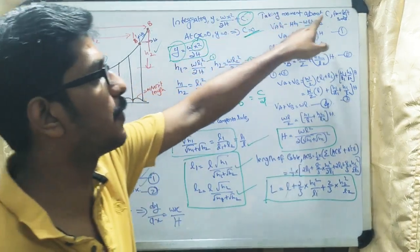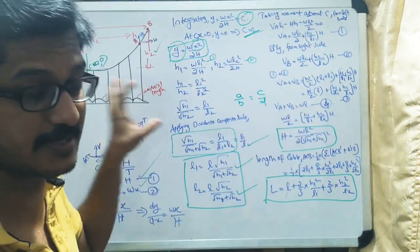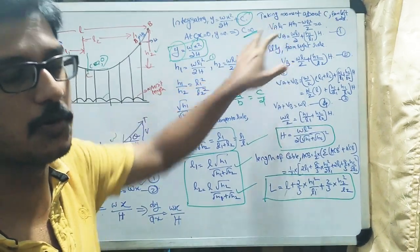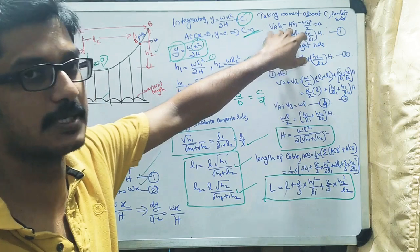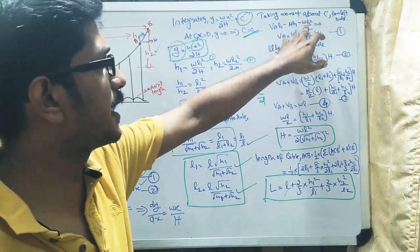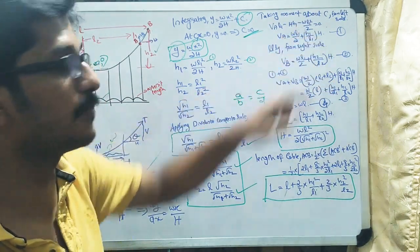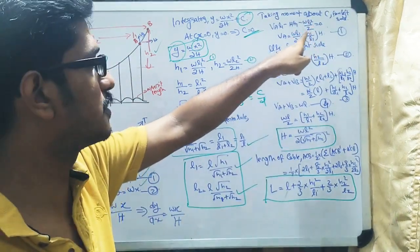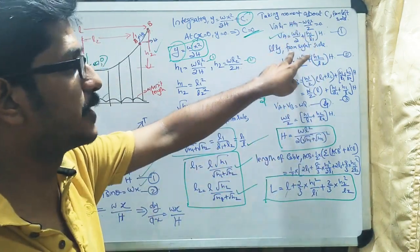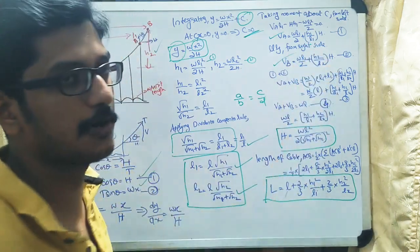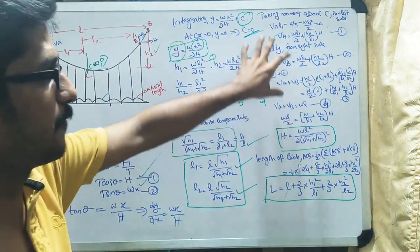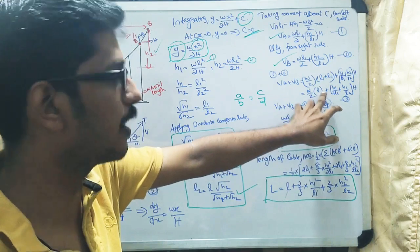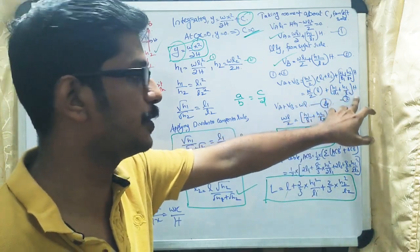Next, we take the moment about point C considering only the left side. This gives: VA·l1 − H·h1 − w·l1·(l1/2) = 0, so VA = (H·h1 + w·l1²/2)/l1. Similarly, taking the moment from the right side gives the equation for VB. Adding VA and VB gives: VA + VB = (w/2)·[L + (h1/l1 + h2/l2)·L].